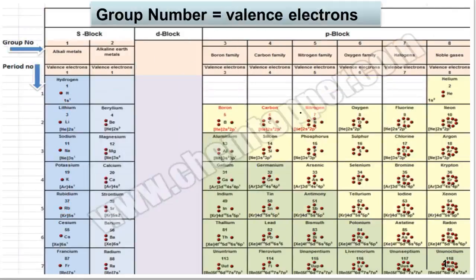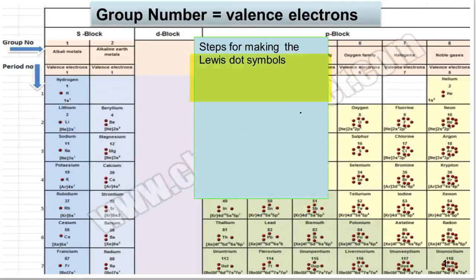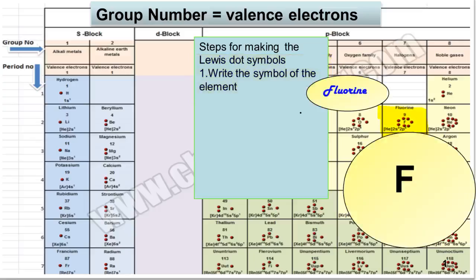The very first step in making the Lewis dot symbol is writing the symbol of the element. Here I have selected fluorine as an example. So first we are going to write down the symbol of fluorine.